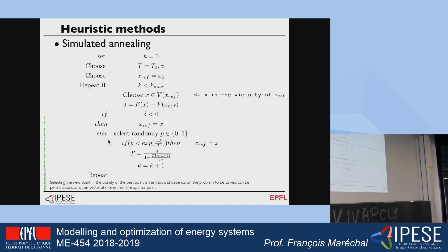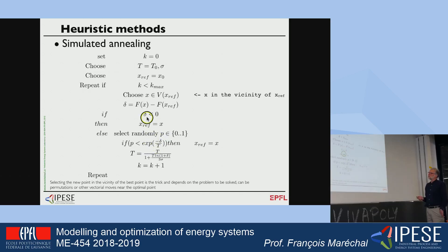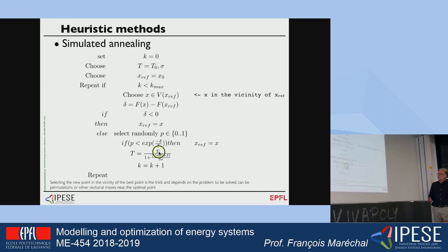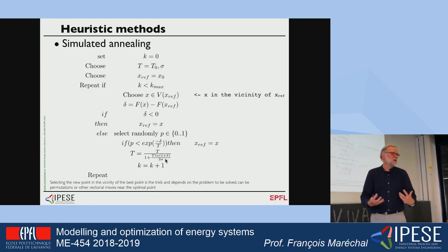To decide whether to accept a worse point, you randomly select a value p and compare it to the difference in the objective function divided by the reference temperature. If this condition is satisfied, the new point becomes the reference even if it is less good than the previous one — this introduces an exploration dimension. You then update the temperature value, which represents the convergence process: temperature decreases over time.